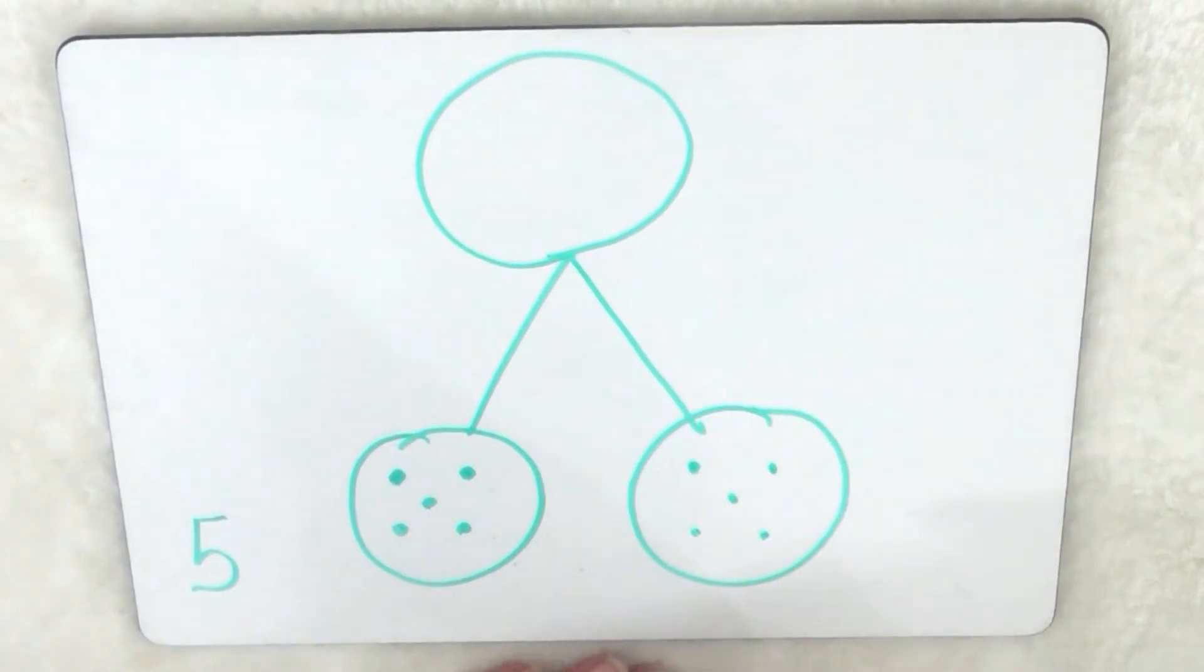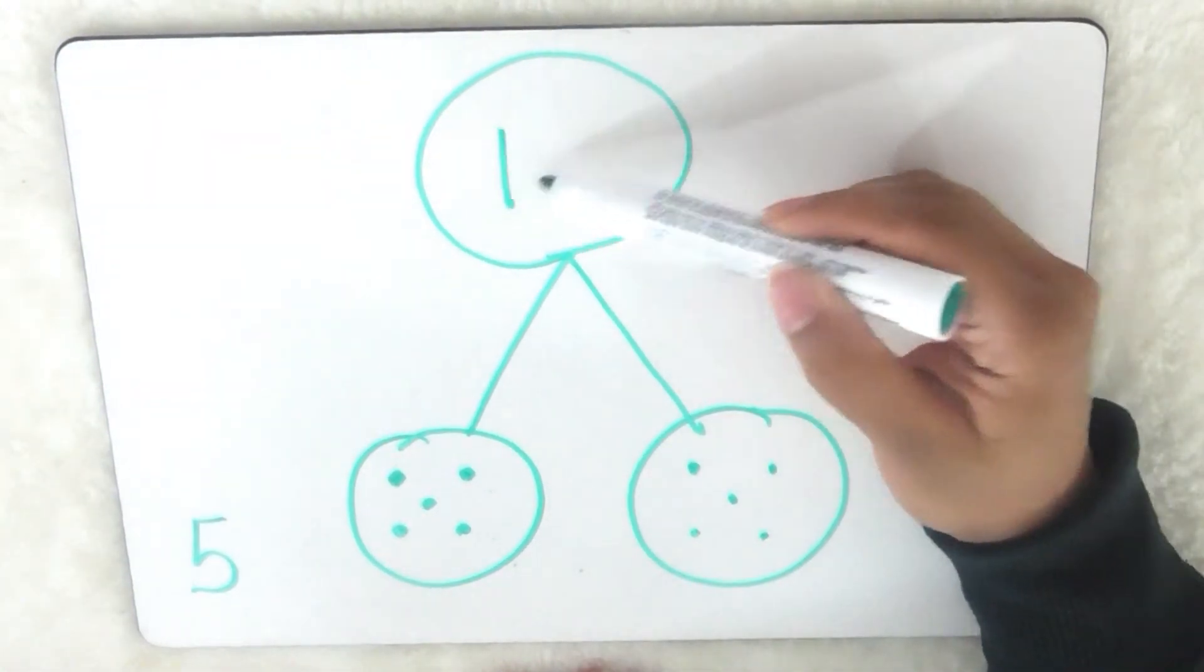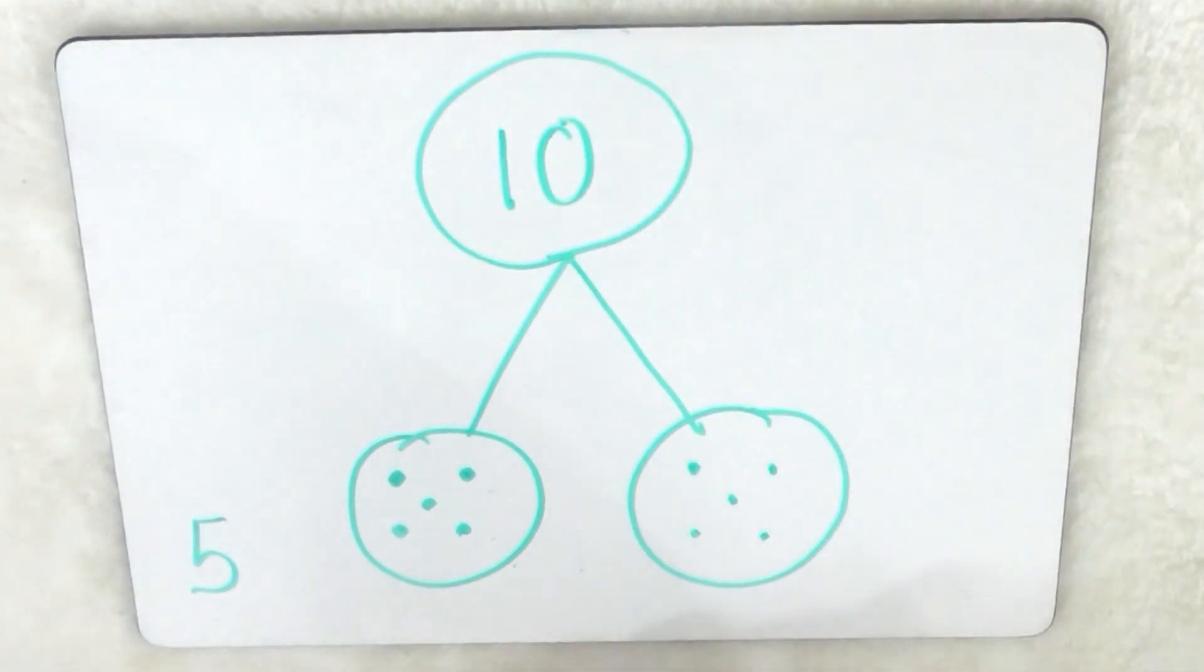Then I need to count how many there are all together. One, two, three, four, five, six, seven, eight, nine, ten. So the answer is ten. So double five equals ten.